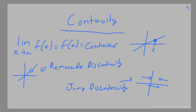And when you have a function that is like a broken line, it doesn't matter where the shaded-in points are — the broken line is called a jump discontinuity. It's basically when the function jumps.